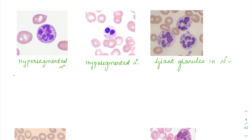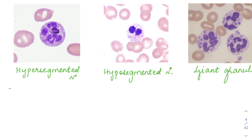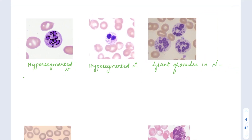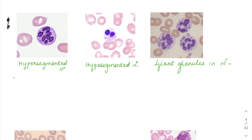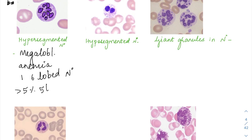Now let us see some image-based questions related to non-neoplastic WBC disorders. In the first image, this neutrophil nucleus has many more lobes than normal — a normal one is trilobed, but here there are multiple nuclear lobes. This is called a hypersegmented neutrophil, a feature of megaloblastic anemia. You can call it hypersegmented when you see at least one six-lobed neutrophil or more than 5% of five-lobed neutrophils.